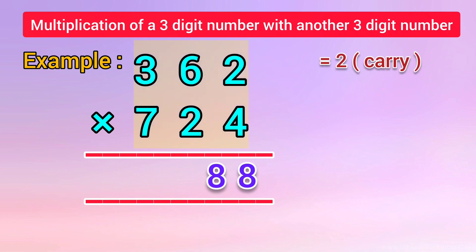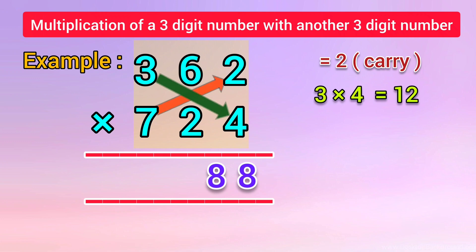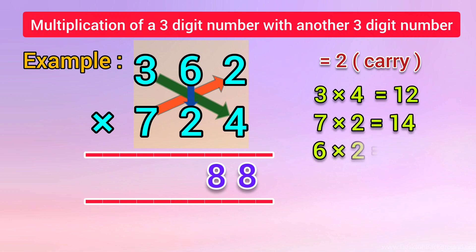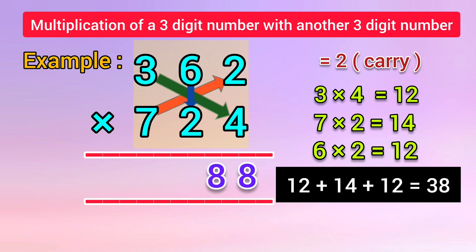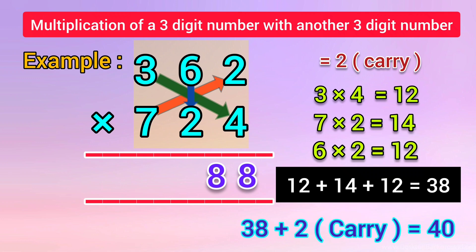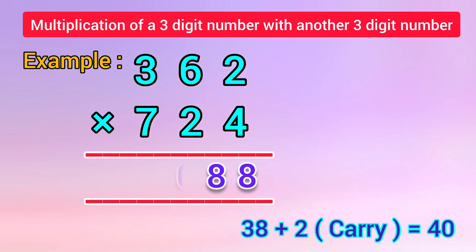In the third step, we multiply the digits of the 3 columns crosswise and vertically. That is, 3 into 4 is equal to 12, 7 into 2 is equal to 14, and 6 into 2 is equal to 12. We add the 3 products: 12 plus 14 plus 12 is equal to 38. We add the 2 carried over from the previous step: 38 plus 2 is equal to 40. We put down 0 and carry over 4 to the next step.